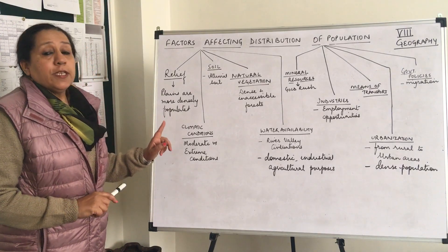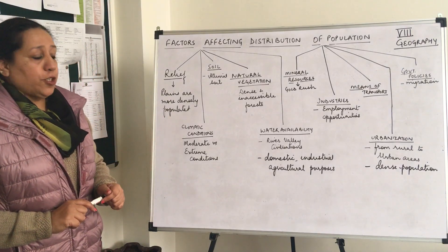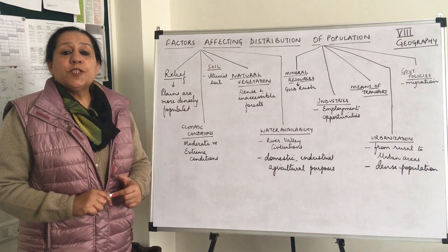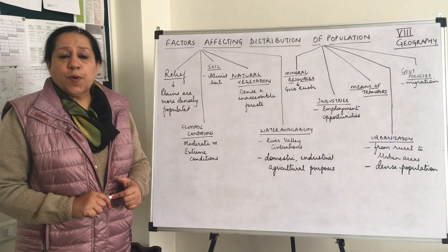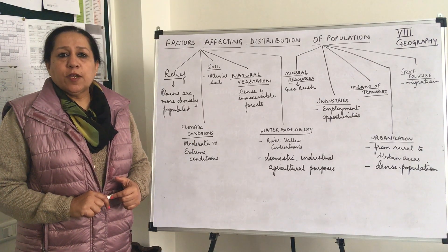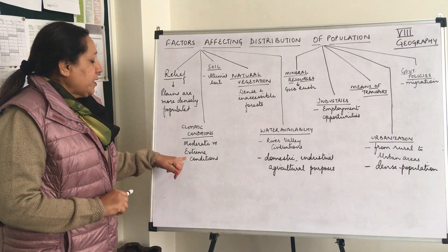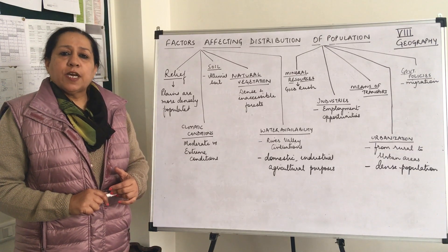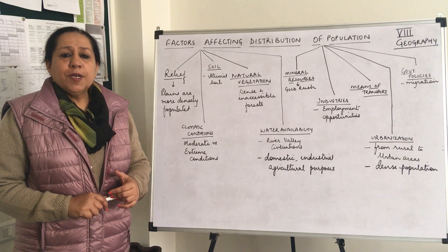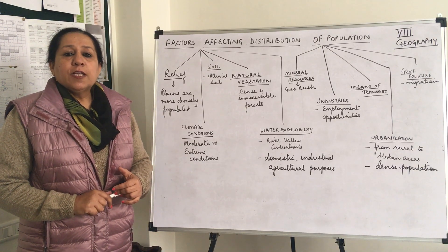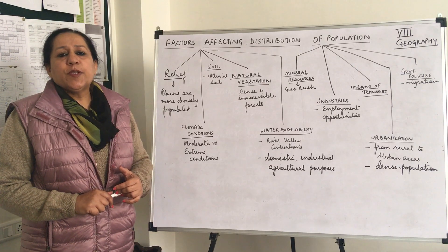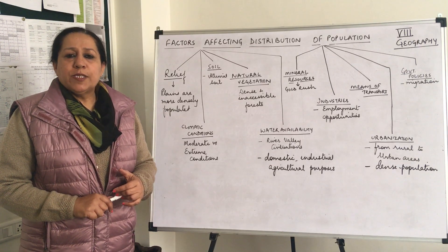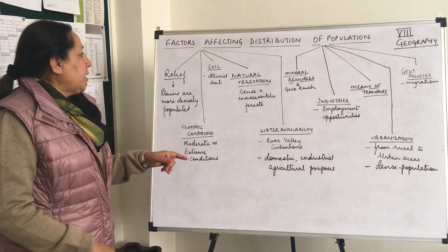The second factor is climatic conditions. Moderate conditions will invite population to settle down in a particular area, whereas extreme climatic conditions discourage people from settling in a particular area. Thus areas with a moderate temperature and rainfall will see a dense population.